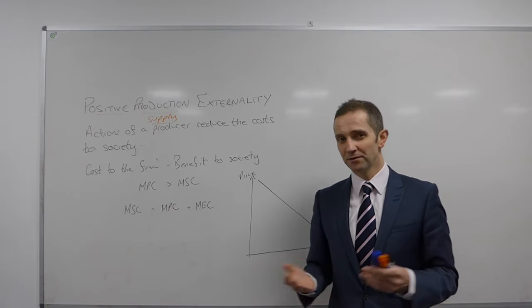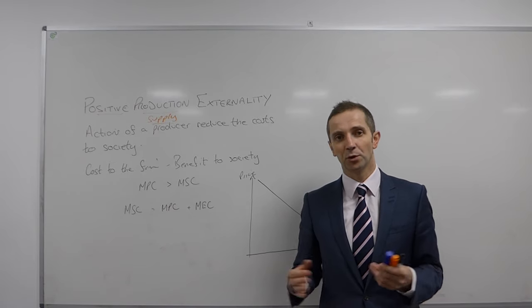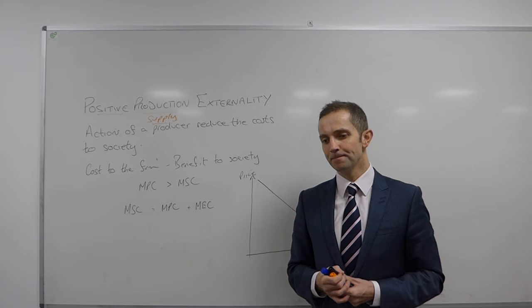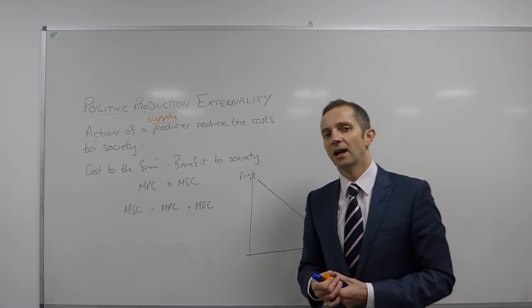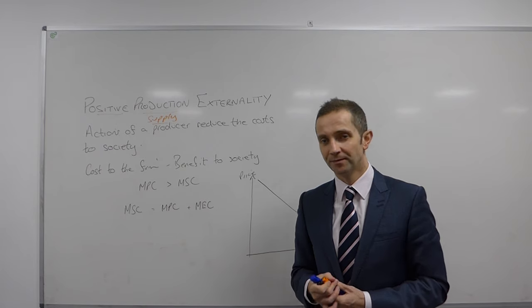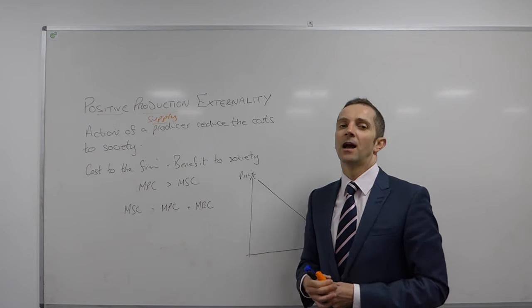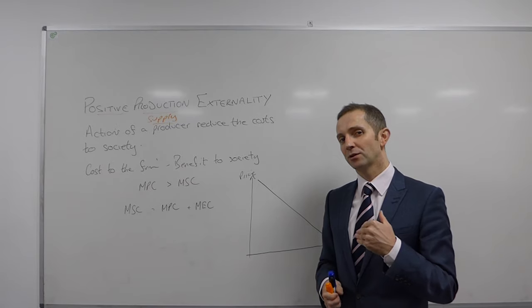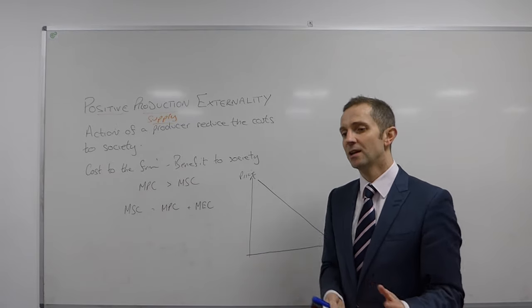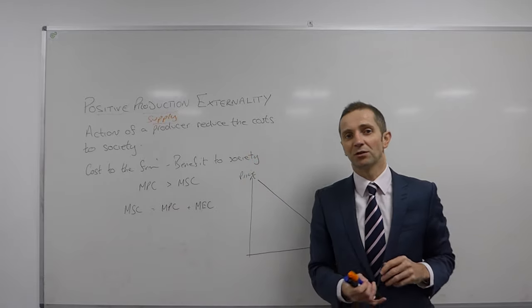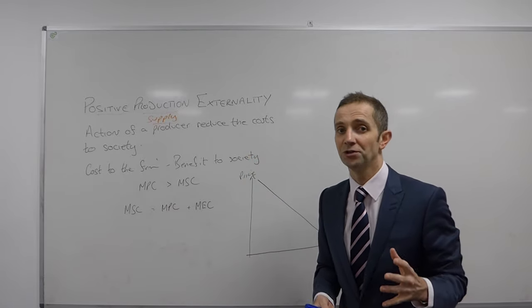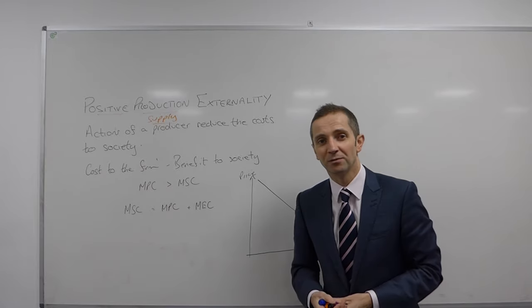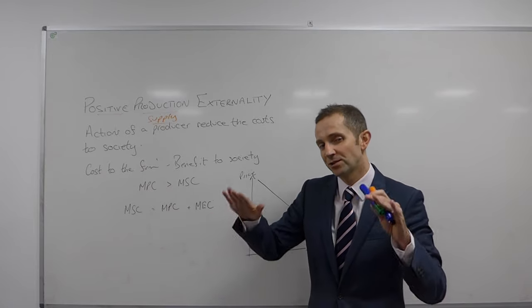Now, in your textbooks, those of you who are studying OCR, for example, in the Book 2, the Year 2 textbook, you will find that the example quoted there is of a manufacturing plant which is cleaning up its waste which is being pumped into a river. And at the bottom of the river or at the end of the river, there is a salmon farm. And so whenever the production facility goes by cleaning up the waste, there is an external benefit to the salmon farm downstream because its costs are reduced because these negative damaging external costs, which may kill and endanger some of the fish, then that is removed. And so the social costs are reduced.